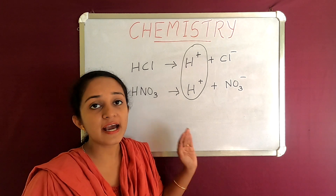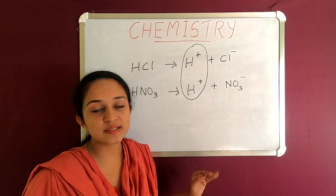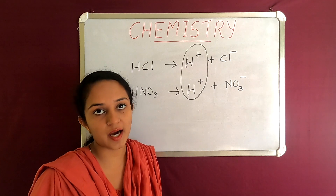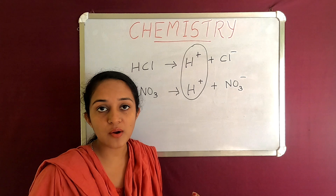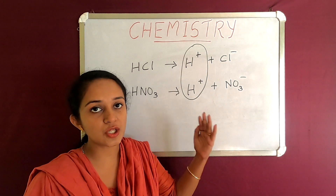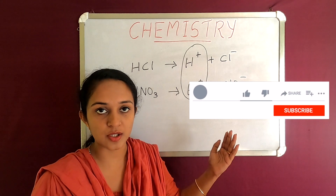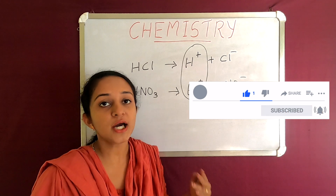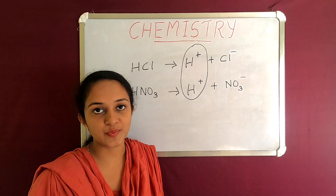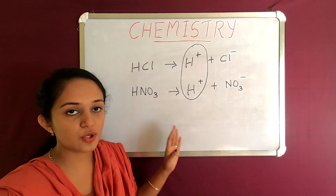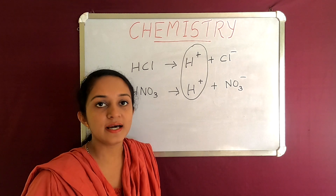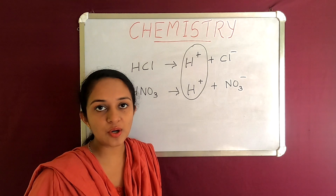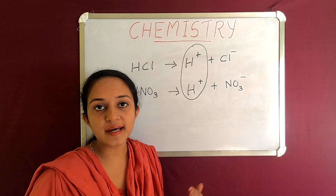Acids differ in strength. If H⁺ ion concentration is high, it is a strong acid. If H⁺ ion concentration is low, it is a weak acid. HCl and HNO₃ are strong acids. Lime water and vinegar are weak acids.